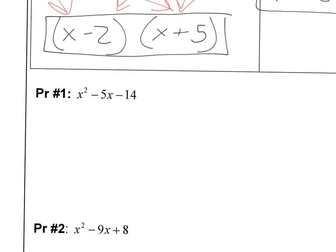So using star method or grouping or any other method that you want to use, go ahead and factor X squared minus 5X minus 14. Remember, you're looking for something that multiplies up to negative 14 and adds up to negative 5. Go ahead and pause the video and come back when you're ready.